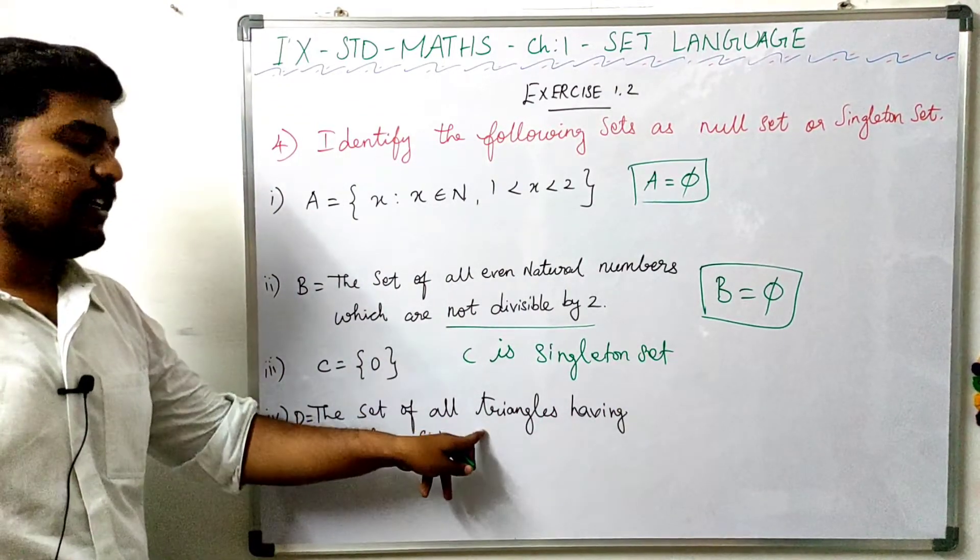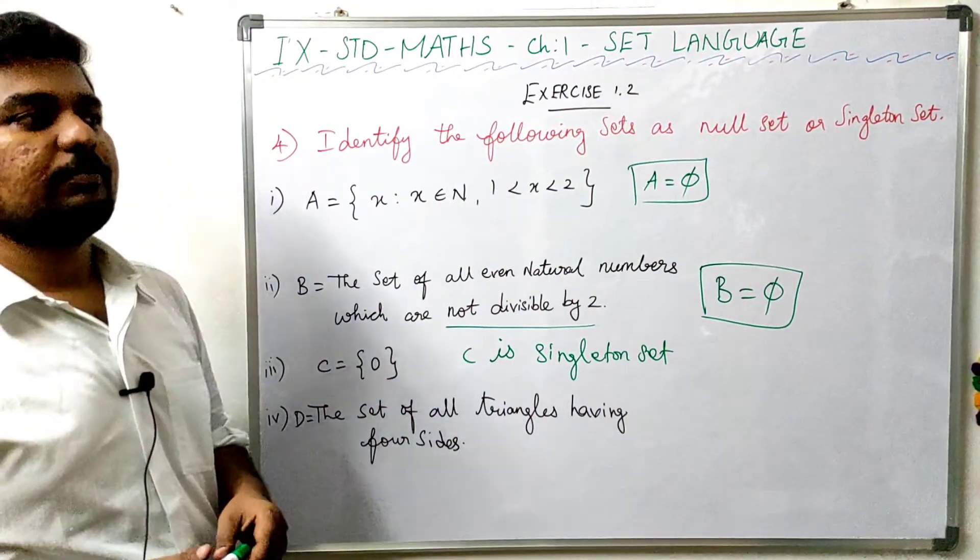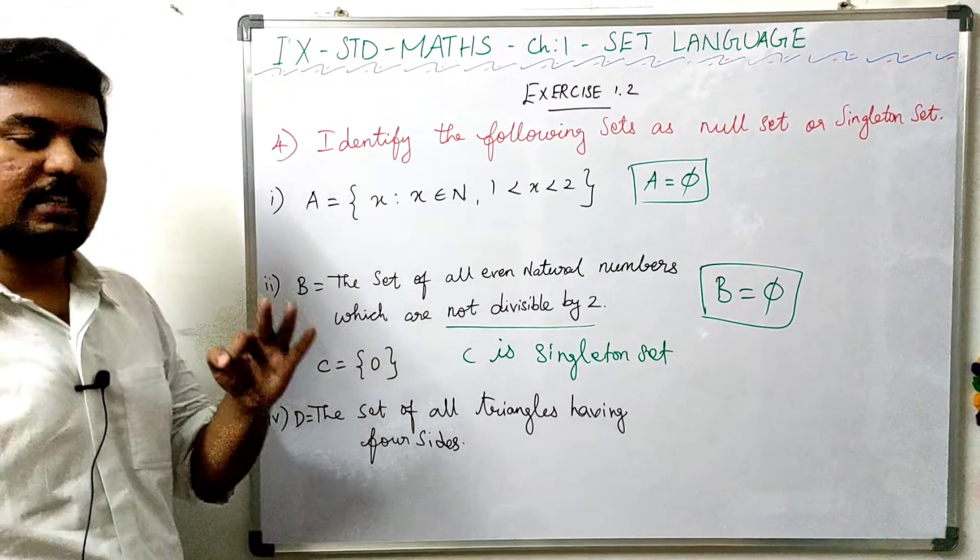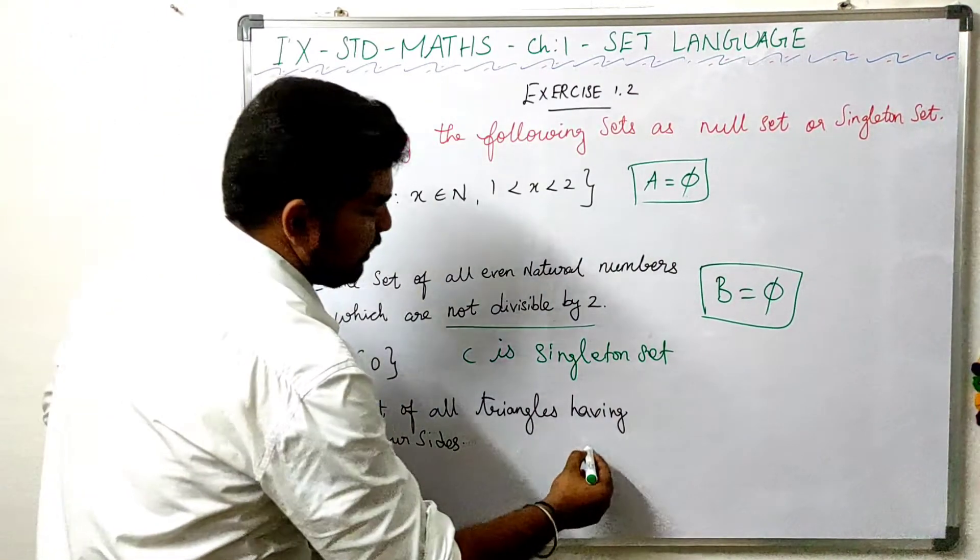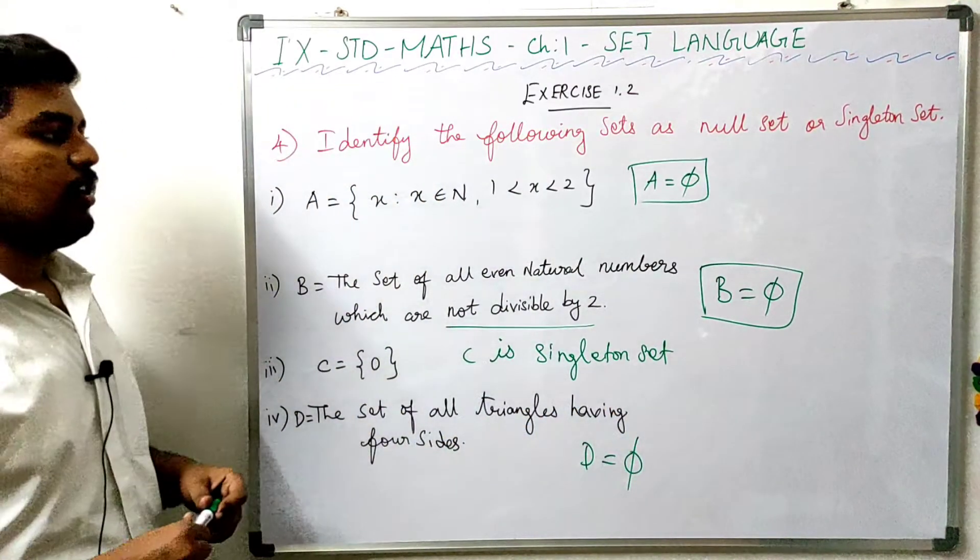Set D is the set of all triangles having 4 sides. Triangles have 3 sides by definition. Set D is a null set.